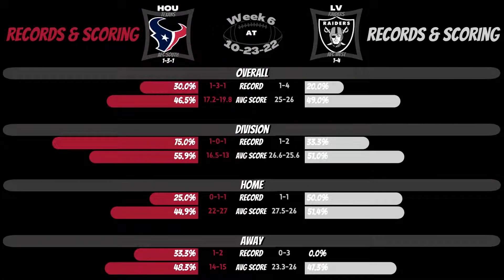65% of people are visual learners, so content is designed to allow all analytical skill levels the ability to decipher shit tons of data with haste. Here, butterfly charts show percentages for records and scoring amongst various game types.